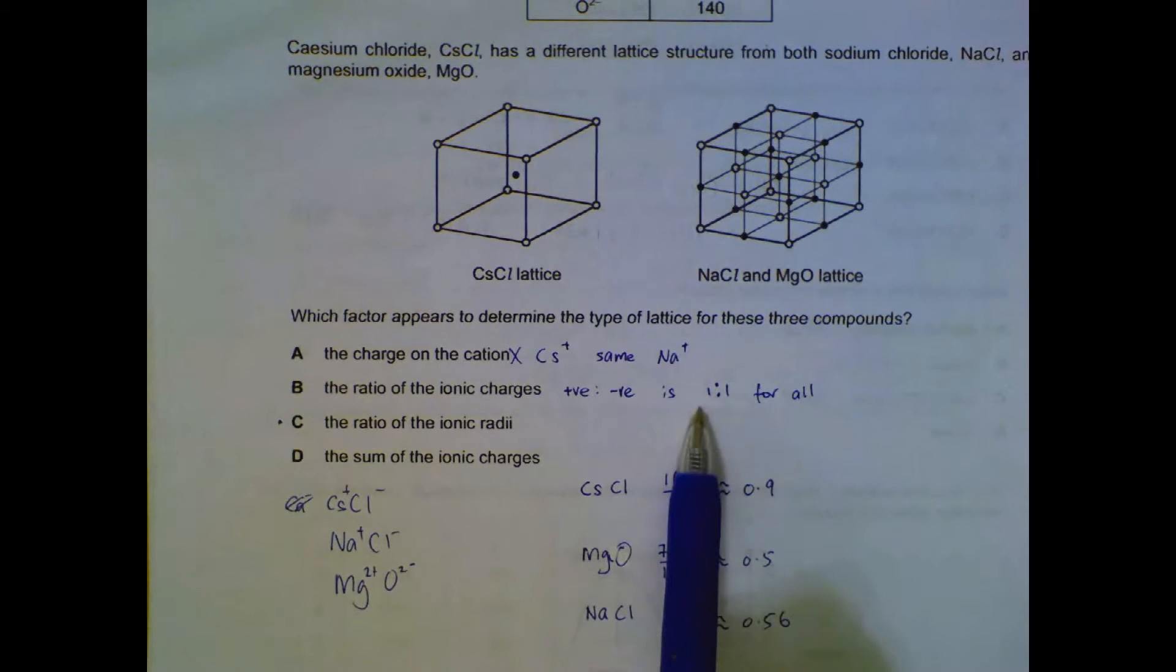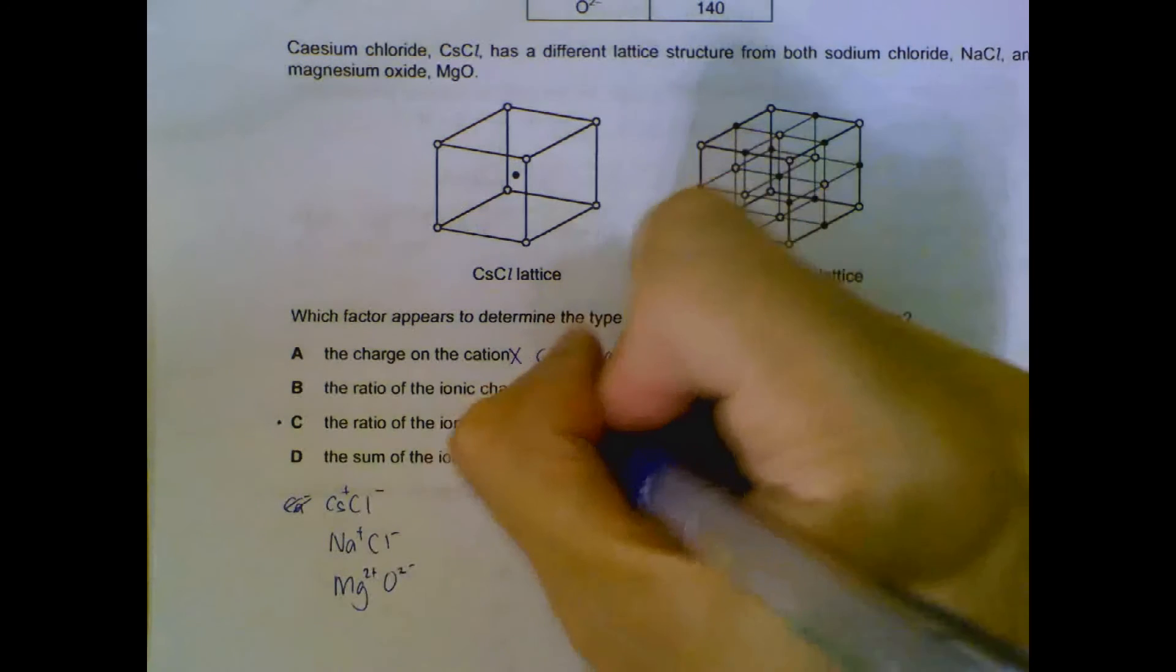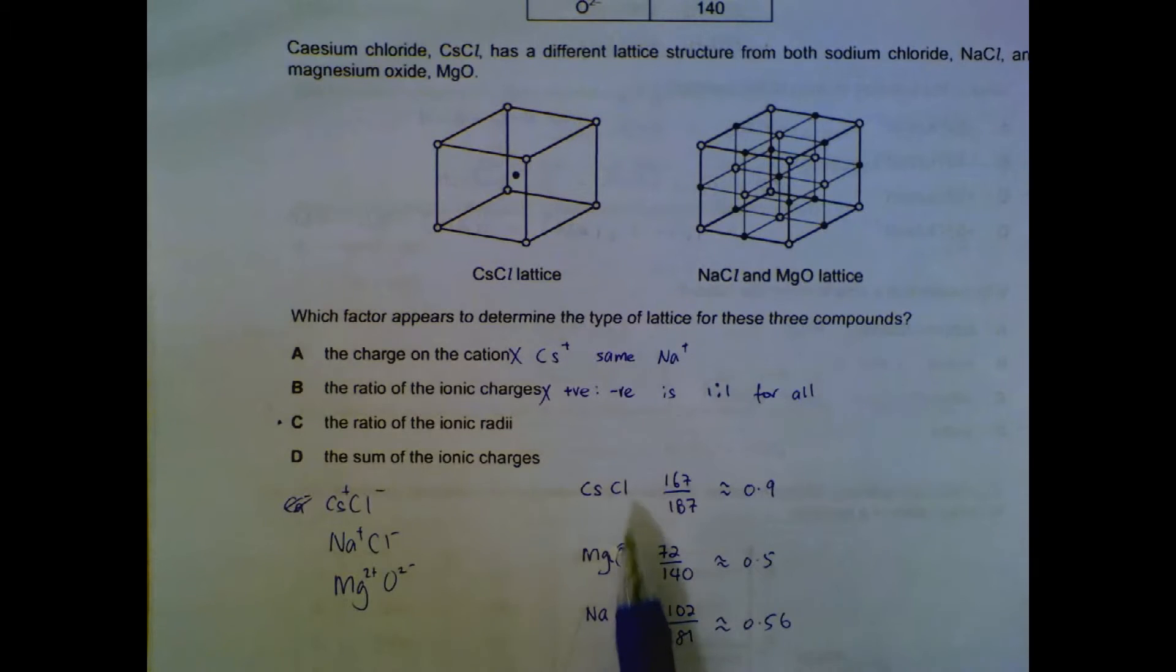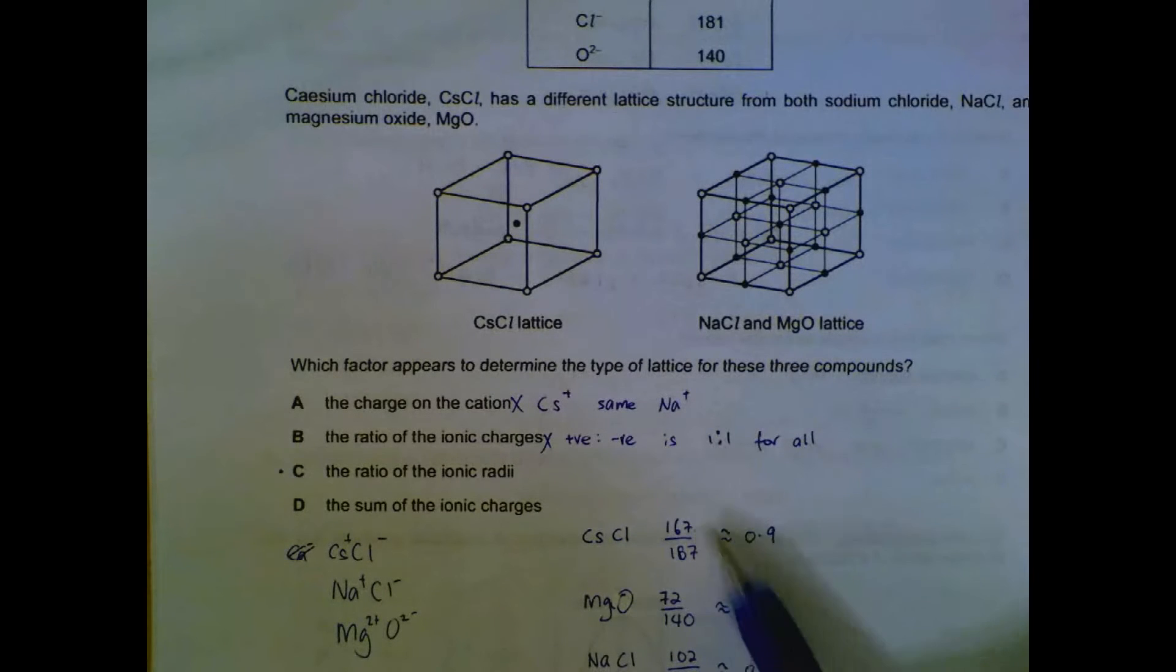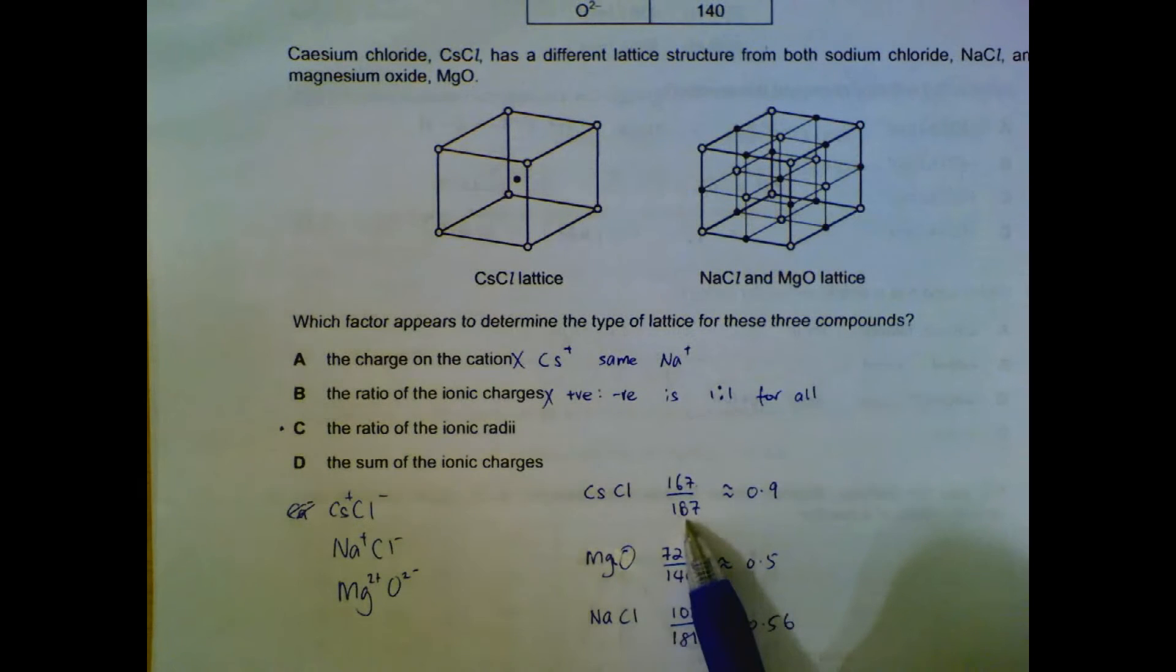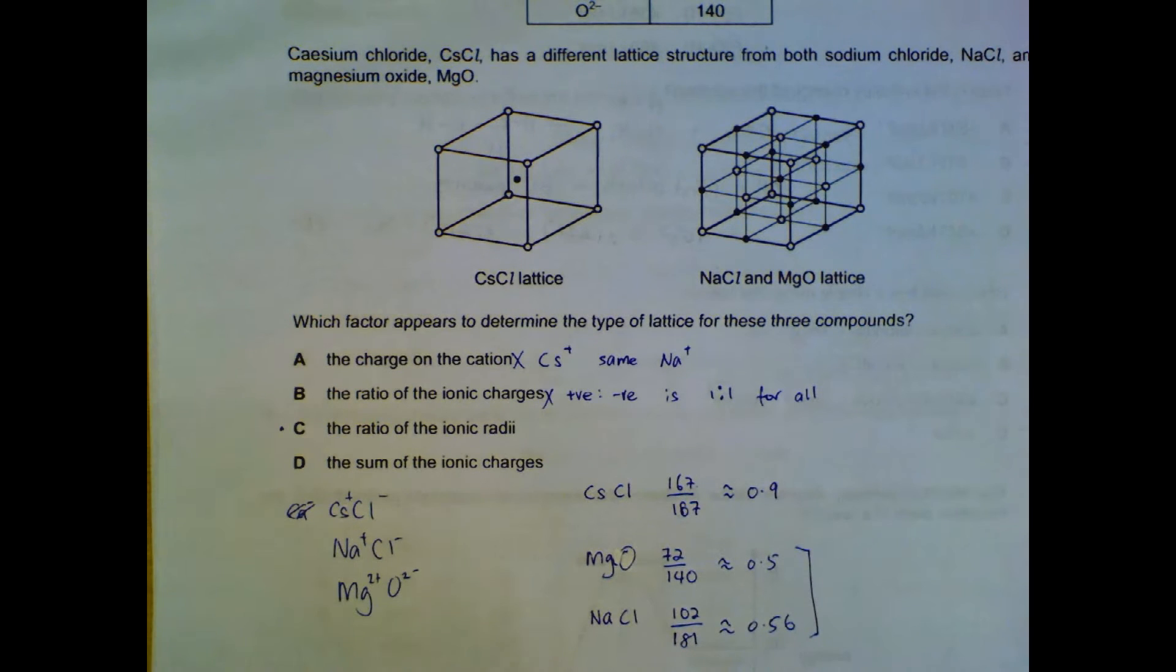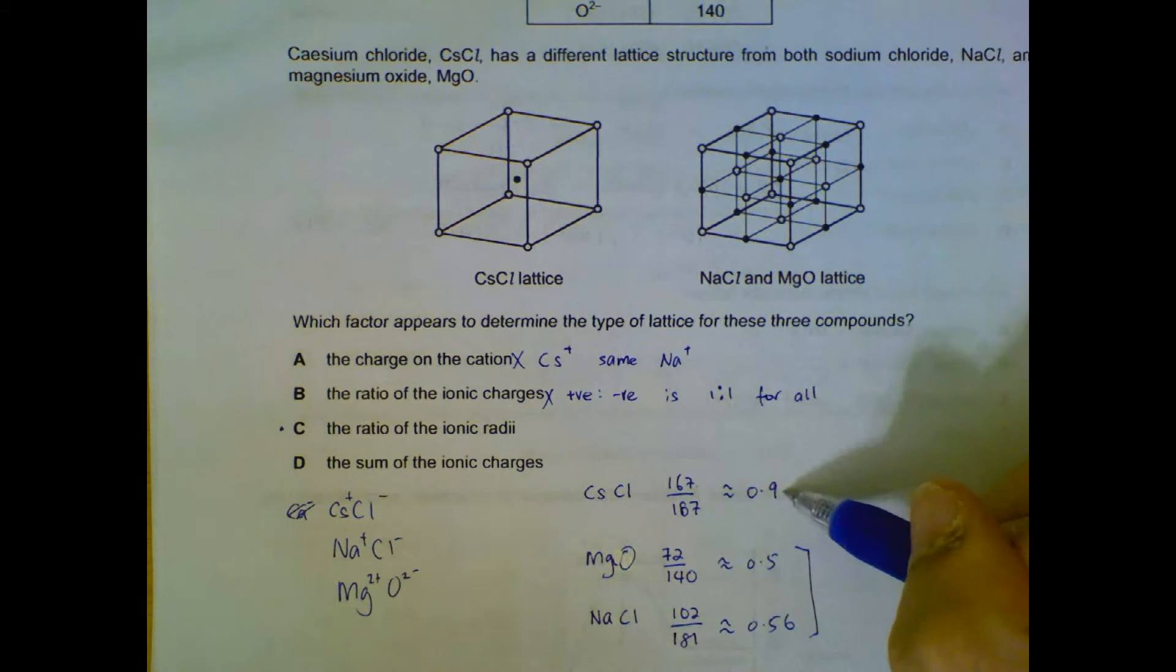The ratio of the ionic radii. We have the numbers for here, the ionic radii, so we take the positive radii over the negative radii for all three of them. The radius for the cesium is 167 and 181 over 187, we get 0.9. Magnesium oxide 0.5, sodium chloride we get 0.56.